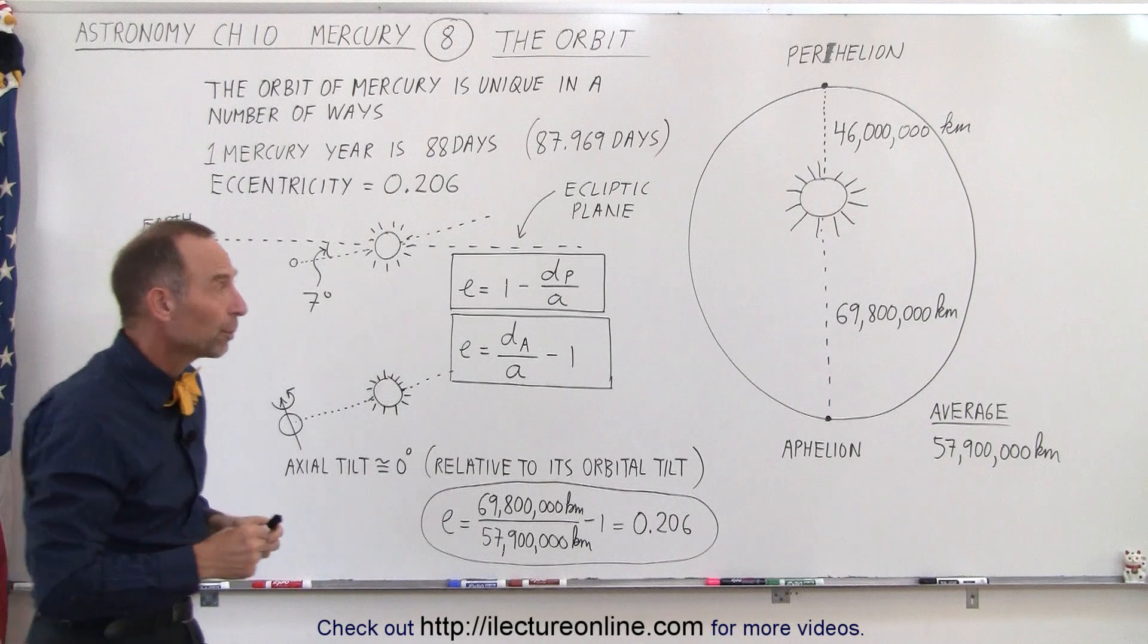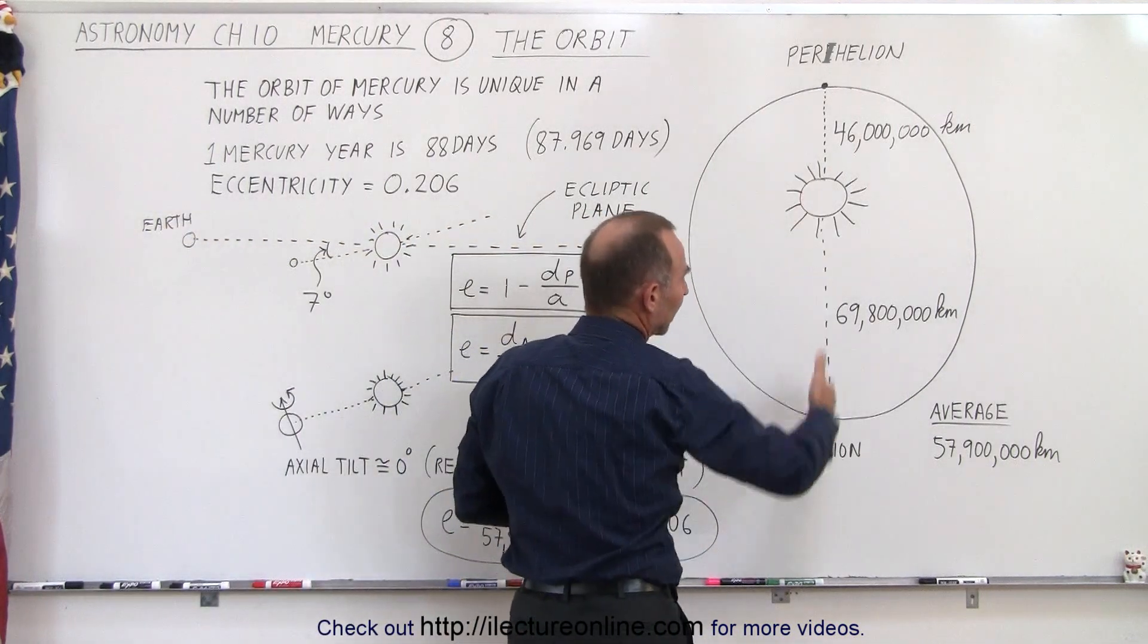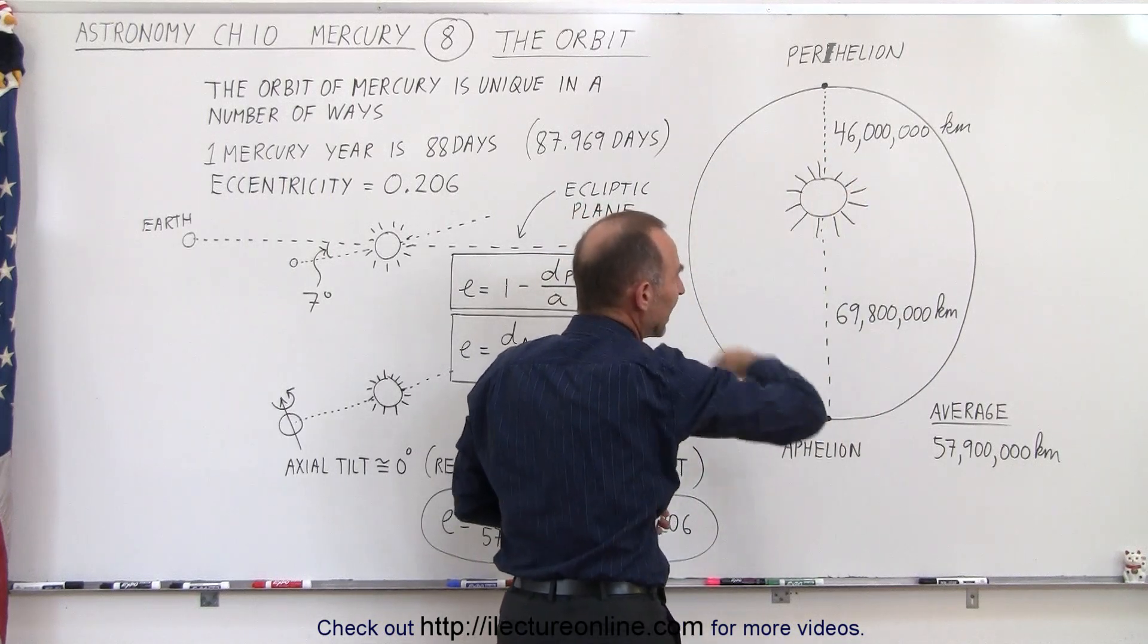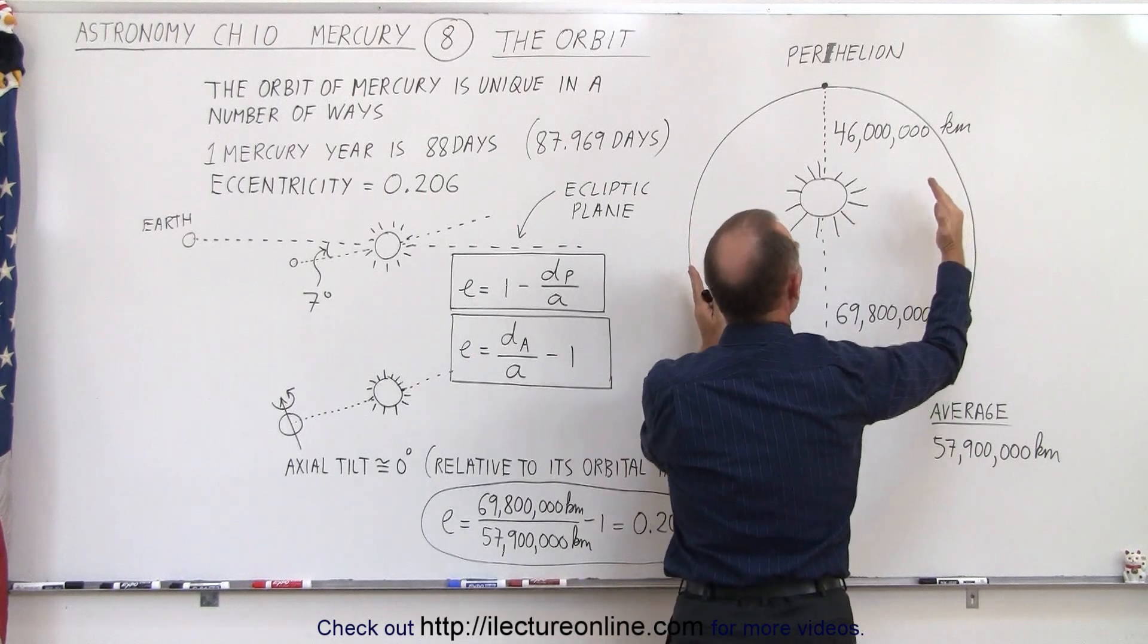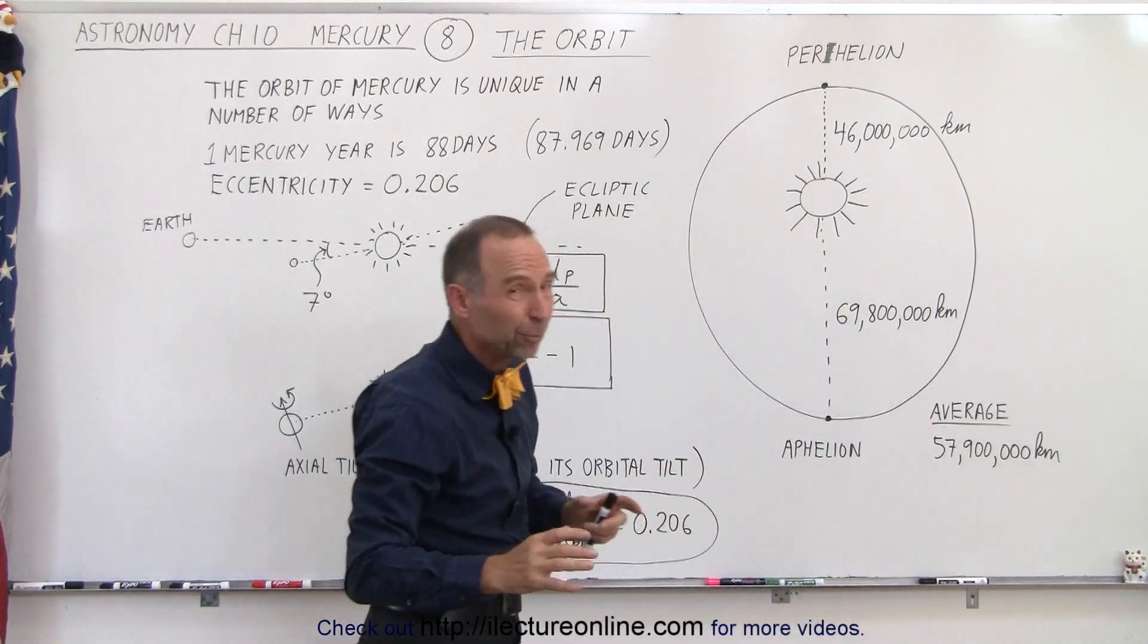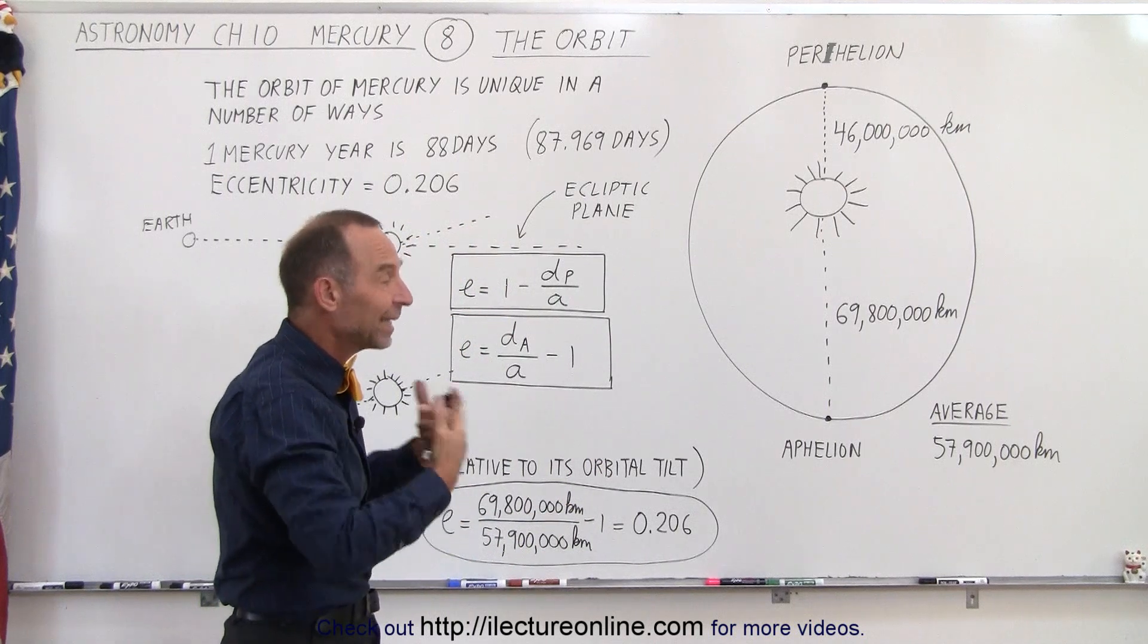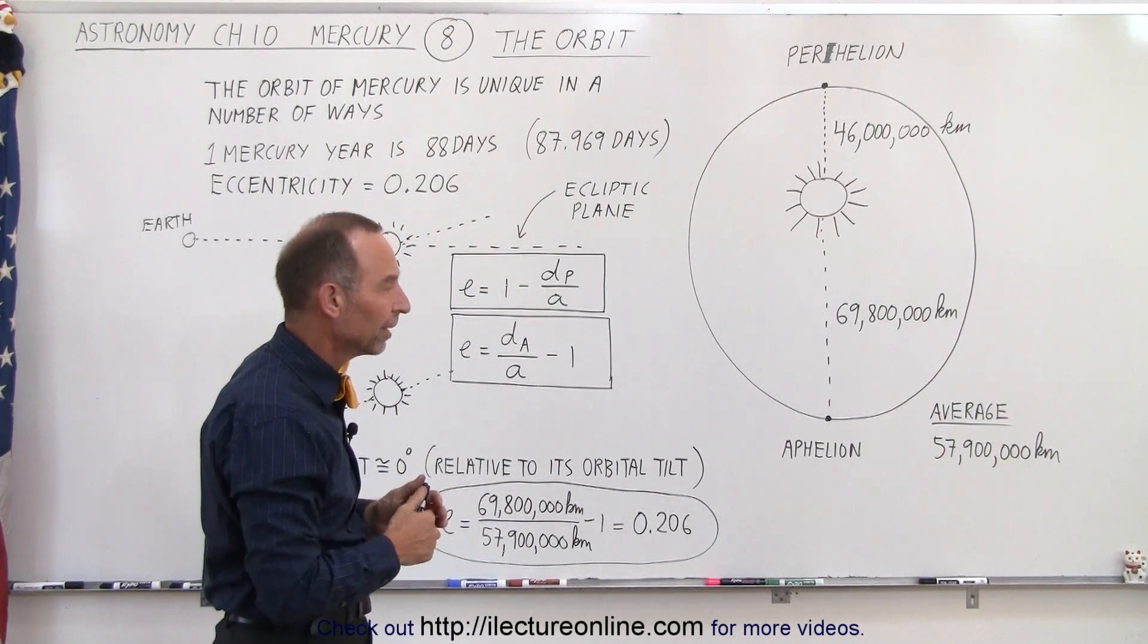Now, one more thing about the orbit is the precession of the orbit. Notice that right now we've drawn it like this, but as Mercury goes around the Sun every 88 days, this slowly tends to rotate around, and you can see that the aphelion rotates at a particular rate. It's a very, very slow rate, it's barely measurable, but we can actually measure that, and we can also predict it from the laws of physics. We'll show you in a later video how that is done.